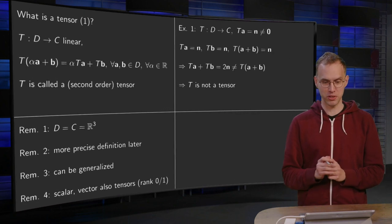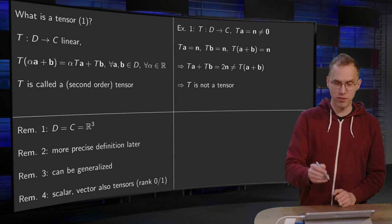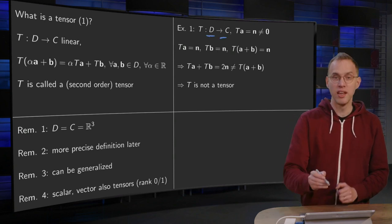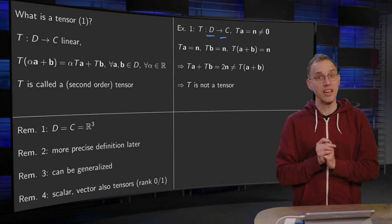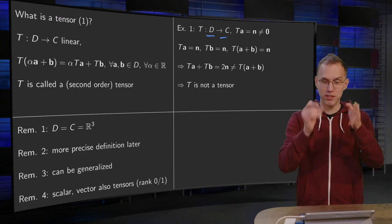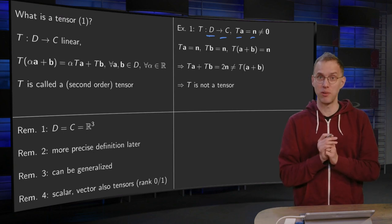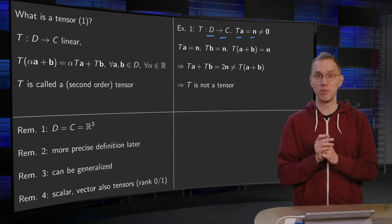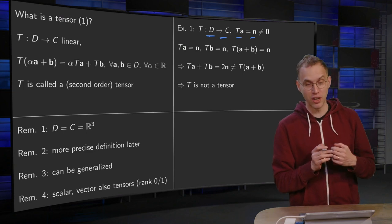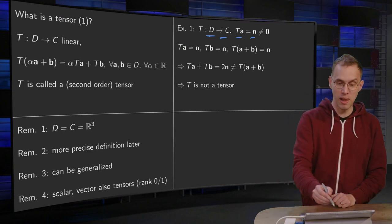Let's do a few examples. Suppose we have a T from D to C. And we say, okay, let's take a really easy example. Map everything, T of every A, just to n, to a fixed vector which is not zero. Is this a tensor? Well, let's see whether that satisfies the definition. Well, T of A equals n and T of B equals n.